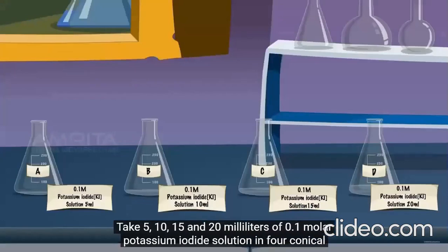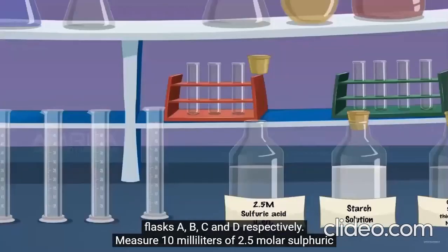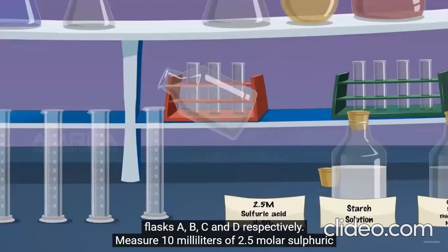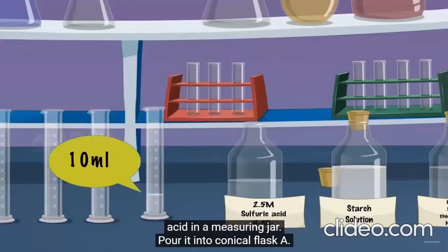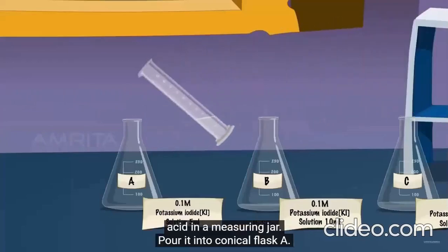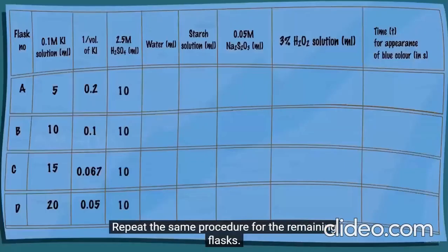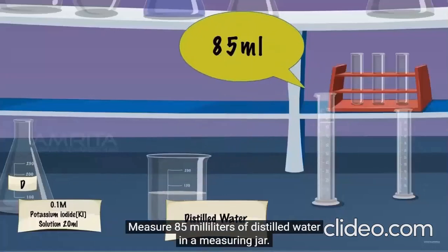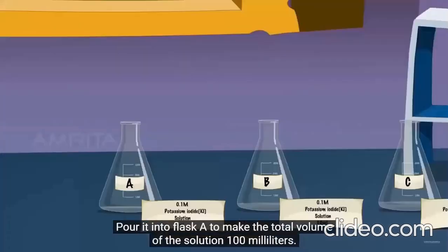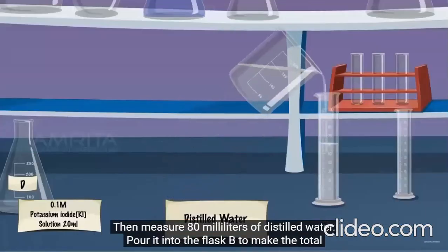Take 5, 10, 15, and 20 milliliters of 0.1 molar potassium iodide solution in four conical flasks A, B, C, and D respectively. Measure 10 milliliters of 2.5 molar sulfuric acid in a measuring jar and pour it into conical flask A. Repeat the same procedure for the remaining flasks. Then measure 85 milliliters of distilled water and pour it into flask A to make the total volume 100 milliliters.